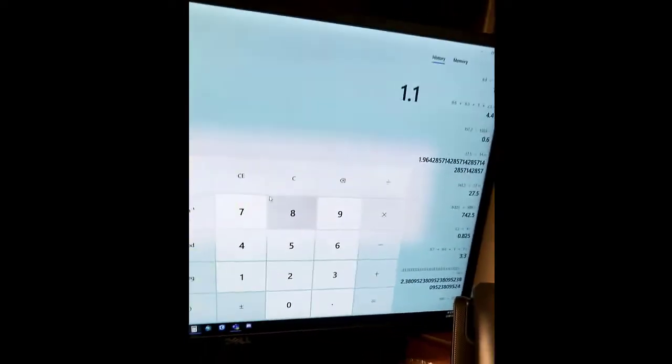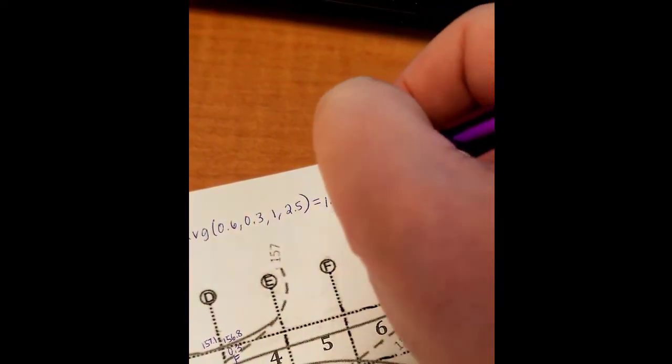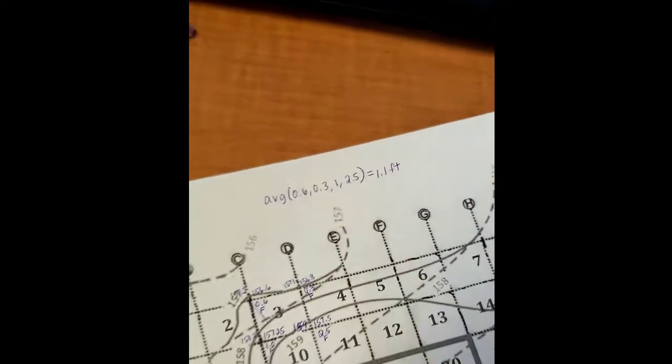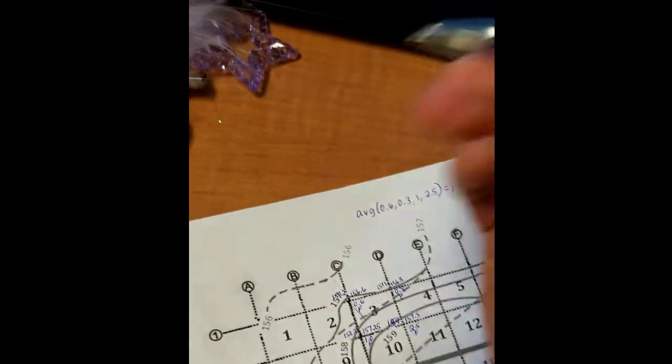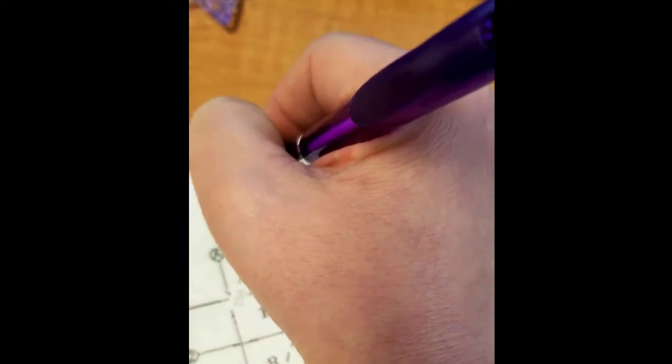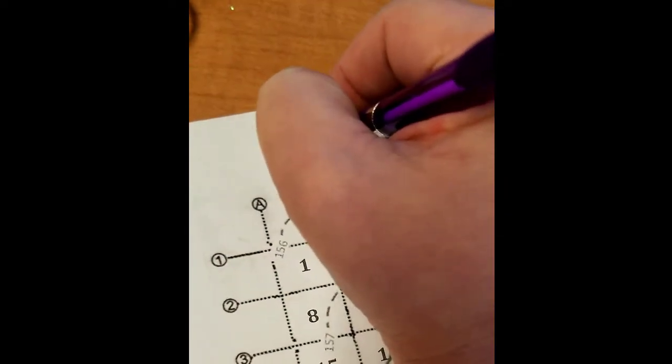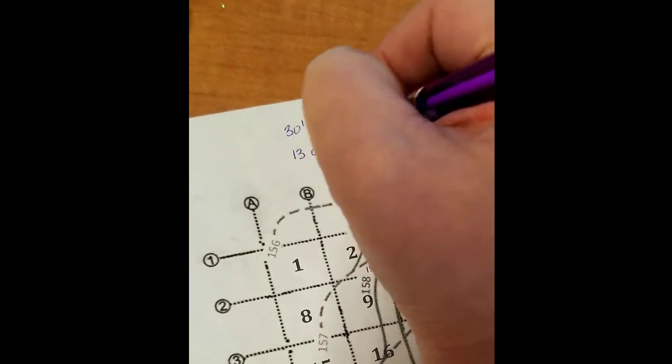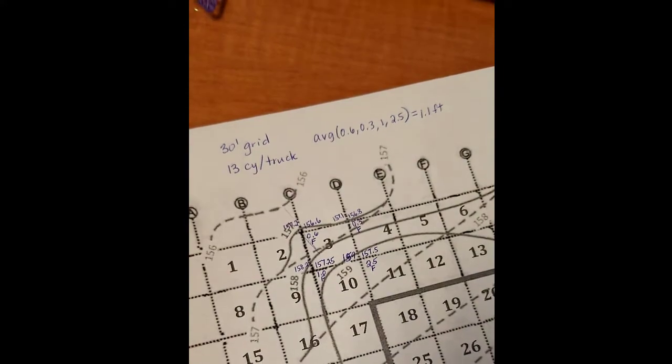So the average change is 1.1 feet. Now I forgot to tell you that these are, in this example, I'm going to say 30 foot grid. And that each truck can hold 13 cubic yards. So you need those two bits of information.